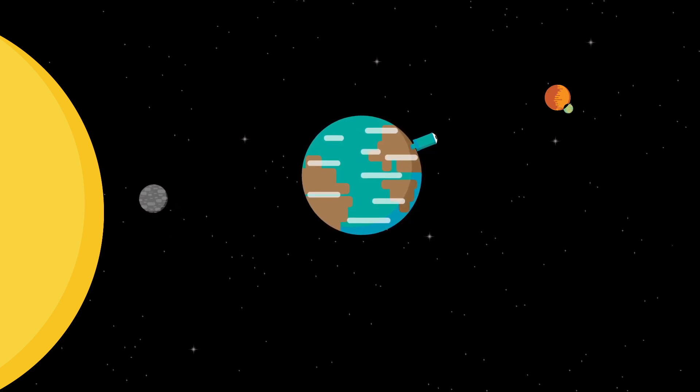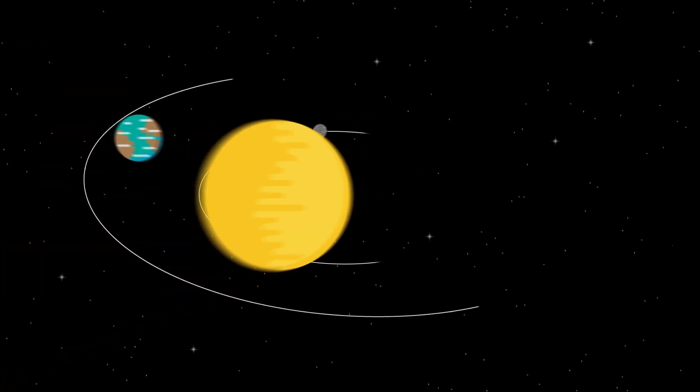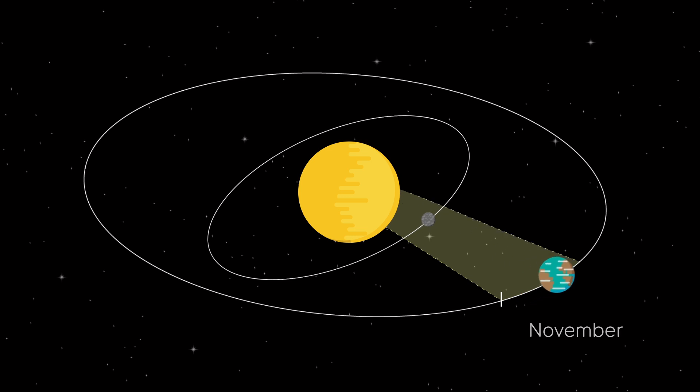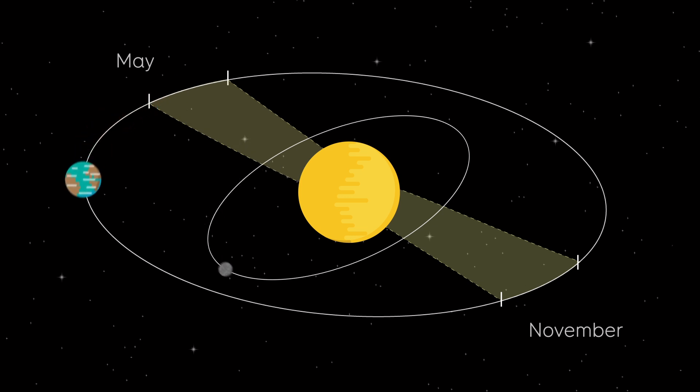But transits of Mercury are rare, because Mercury's orbit is tilted relative to the Earth. That means that Mercury can pass exactly between us and the Sun, only when we are on the part of our orbit that crosses Mercury's orbital plane.